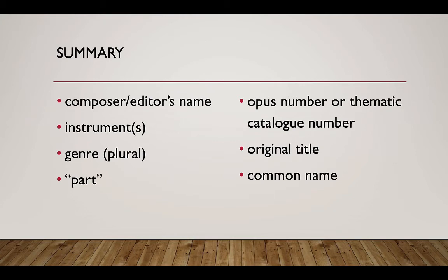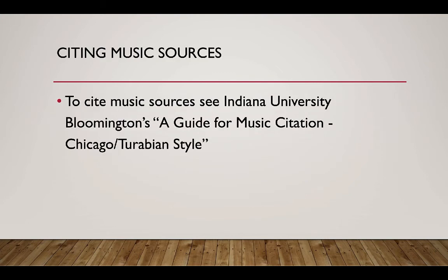In summary: composer's or editor's name, instruments, genre (always using plural), the word 'part', opus number or thematic catalogue number, original title, and common name. Most citation styles aren't very clear on how to cite music sources. See Indiana University Bloomington's 'A Guide for Music Citation, Chicago-Turabian Style' for advice.